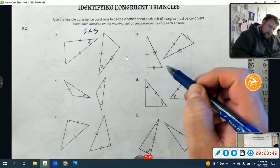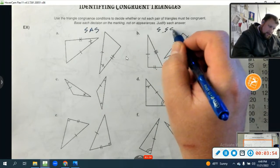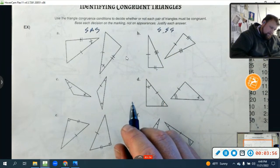Let's look at B. I have a side, a side, and a side. So that is exactly side, side, side congruency.